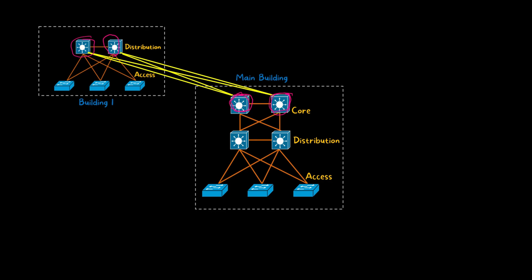Why are we connecting like this? Because even if one core switch fails, this distribution switch can still get connectivity from the next core switch. That is why we are making the cross connection here.